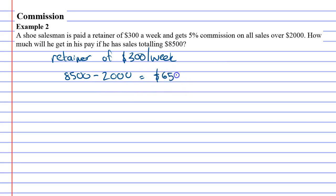He had $6,500 over the $2,000, and he gets a 5% commission on that. So we take 5, divide it by 100, and multiply it by $6,500. 5 divided by 100, times $6,500, equals $325.